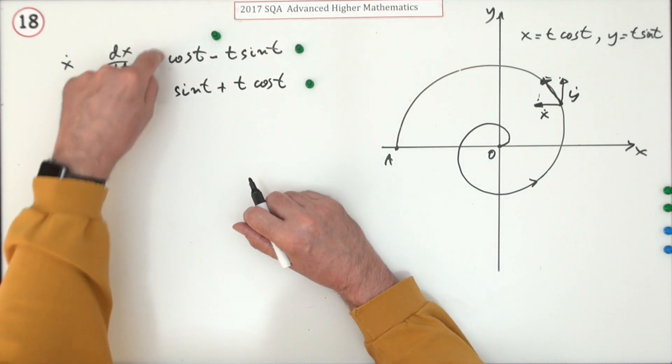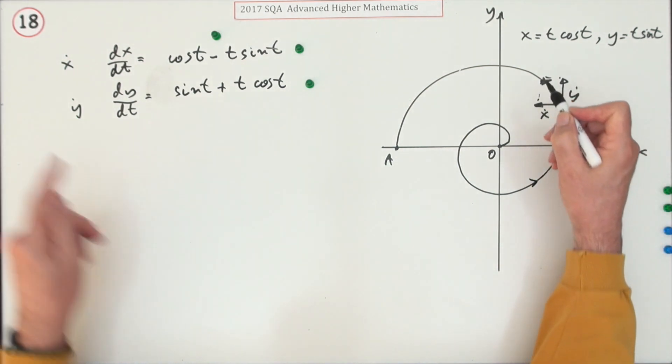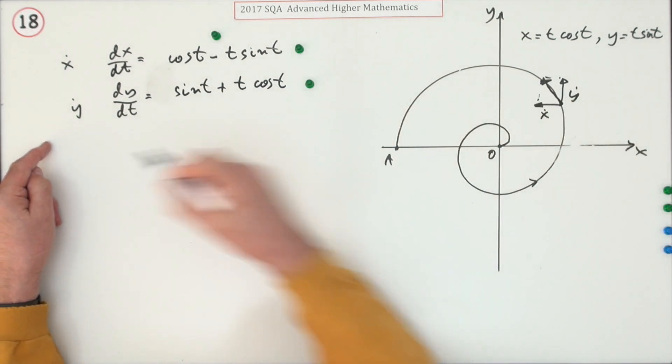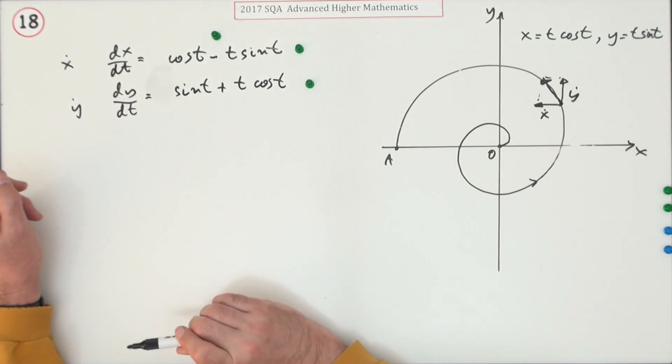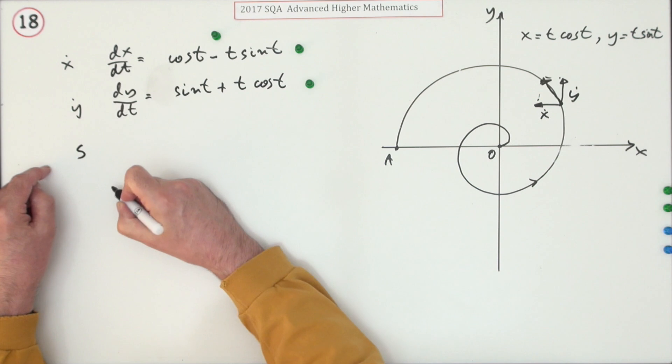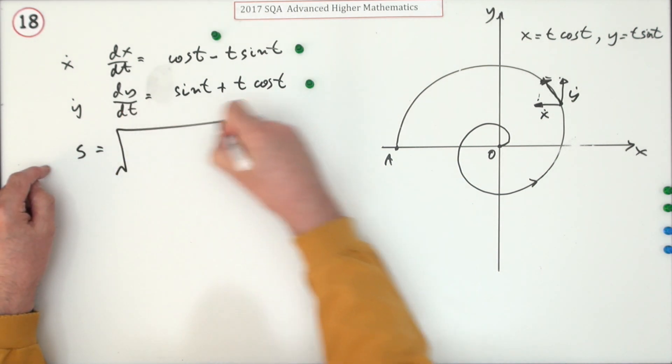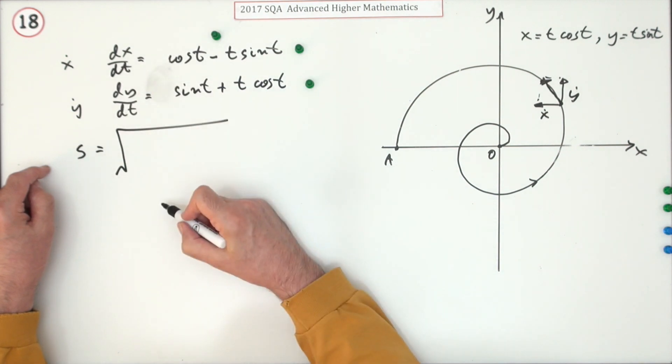But once you've got the two components, there's only one bit left to get this velocity. And it's the speed you want, which is just the magnitude of that. You're not interested in its direction. So that speed will be given by the square root of these two components squared.